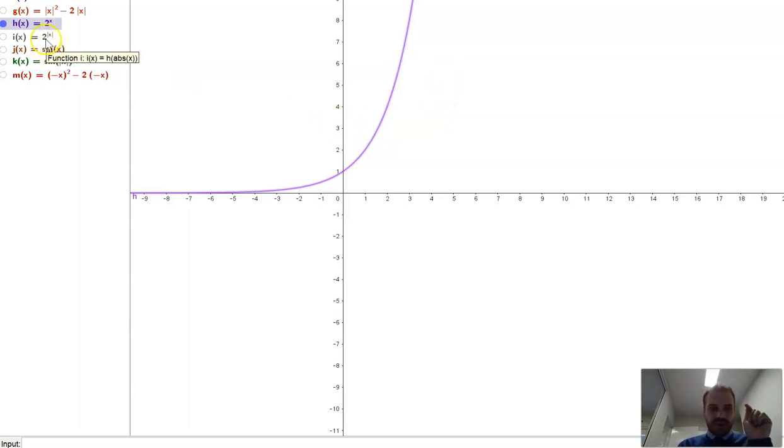Now think for a moment, what would 2 to the absolute value of x look like? It's going to follow the same rules as the previous one, and we get this. Again, we take the positive, the function where x is greater than 0, and then we reflect that in the y-axis.